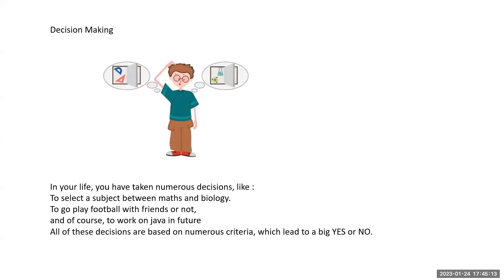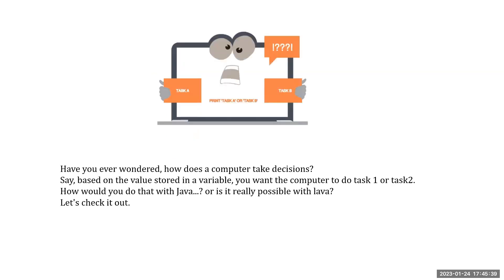Before that, I mentioned how we generally take decisions in our life — to perform some task based upon your decision and condition, and depending on that output you're going to perform something. Similarly, if we check with a computer, it does the same thing. But how do we achieve this kind of condition within the computer? We have to use a programming language.